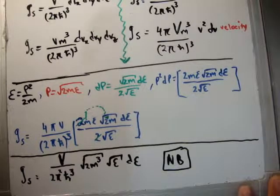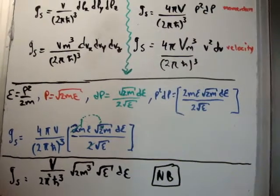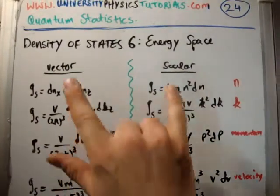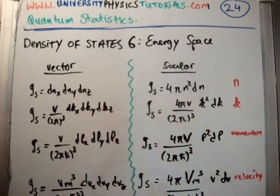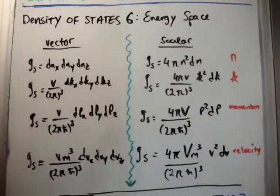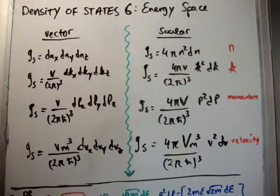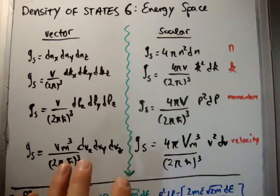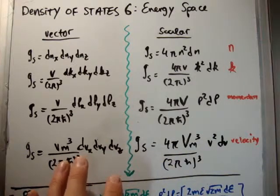Now, just to finish, just to conclude this section on density of states. So now we have the density of states in vector and scalar space for various different quantities. And we'll be using these in order to calculate the number of particles, the energy, and all that sort of thing. So these are very important expressions.